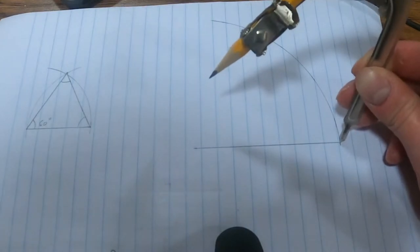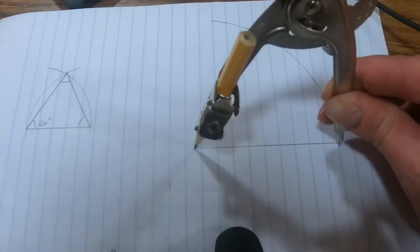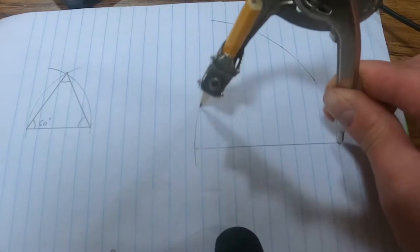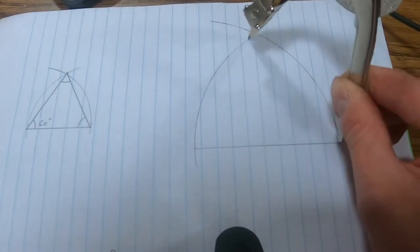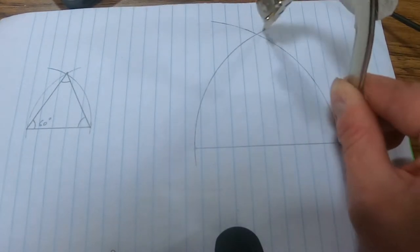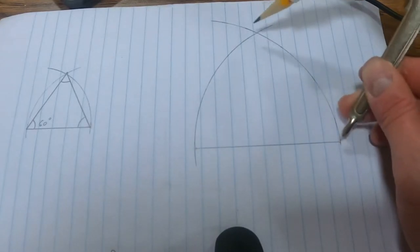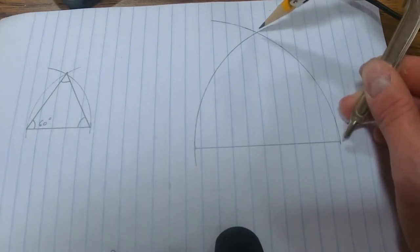Okay, so now I'm going to do the same thing, center at the other side length, and I'm going to draw a circle section. And that is where I want to be.